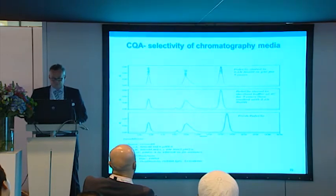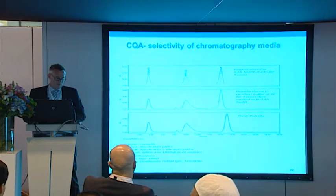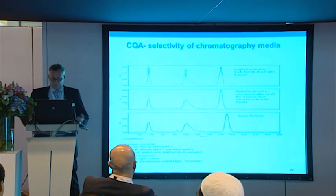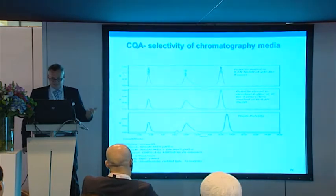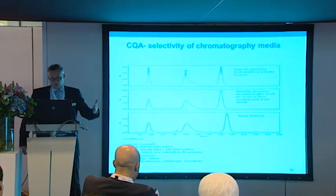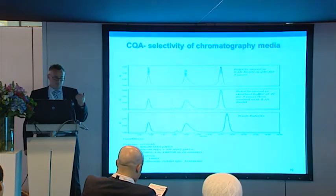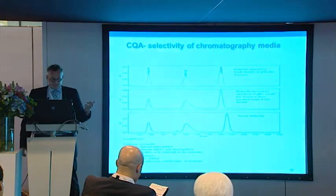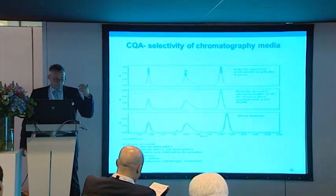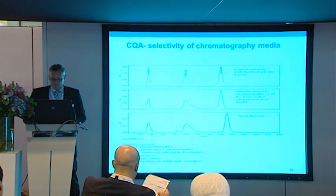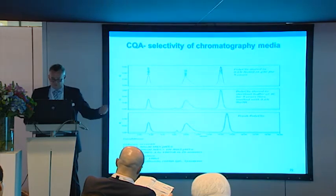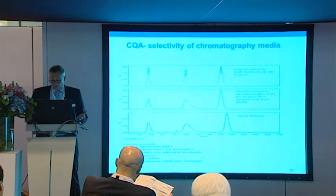Chromatography media is also a very important part in your purification process. A critical quality attribute is a selectivity test that is done for all media that we produce. That selectivity test gives you a guarantee that the selectivity is always the same from one batch to the other — this is our process control and it secures lot-to-lot consistency.